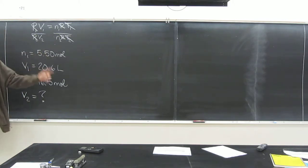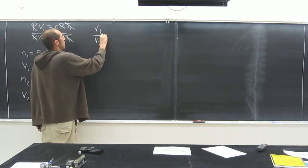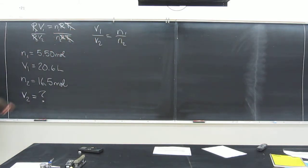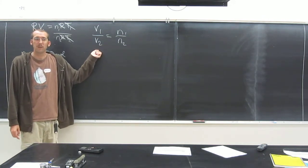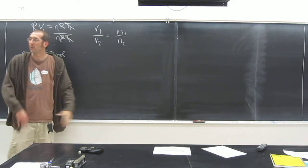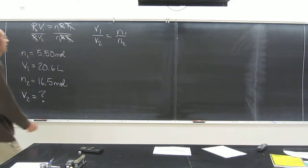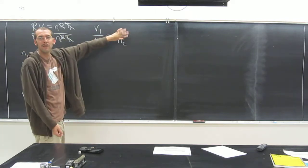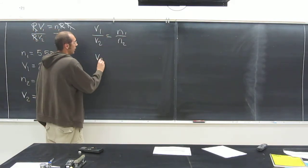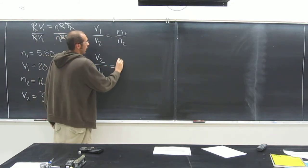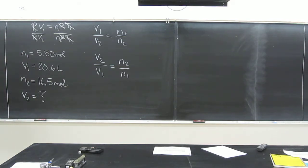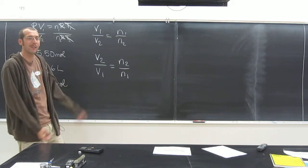So now our equation breaks down to V1 over V2 equals N1 over N2. And we've got all of that information, right? Except for V2. So all we've got to do is isolate that variable. You guys remember algebra, how to isolate the variable? Let's do it together. So the first thing I'm going to do, if it's in the denominator, I like to just flip the whole thing over. If I flip this side over, I've got to flip that side over, right? So my new equation is V2 over V1 equals N2 over N1. Is everybody okay with that?